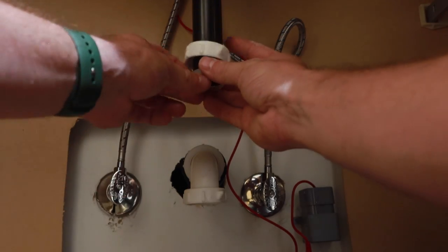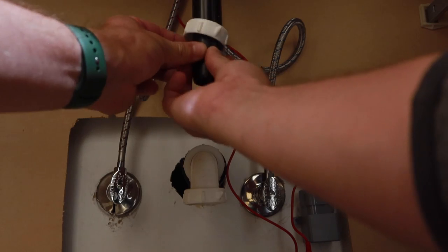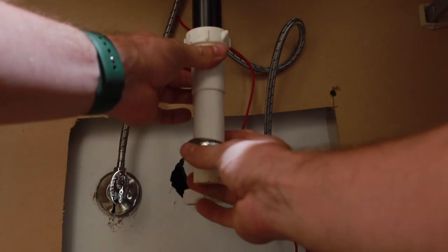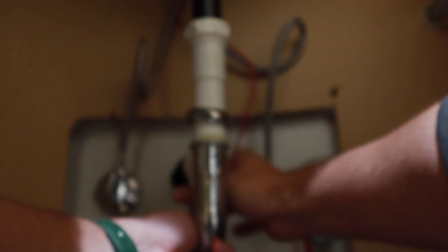Each drain assembly is a little bit different and in my case, I need to add a little down pipe extension to the underside. So I'm disassembling the P-trap and then reconnecting the whole assembly.